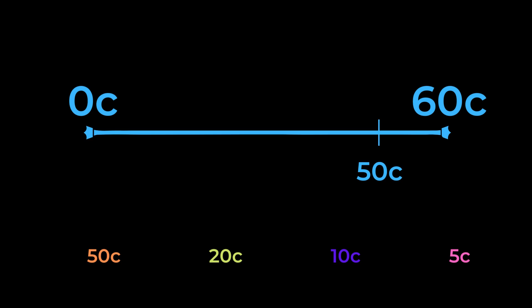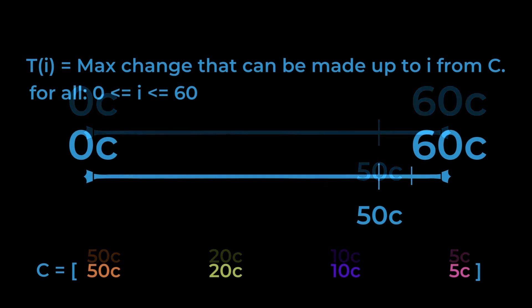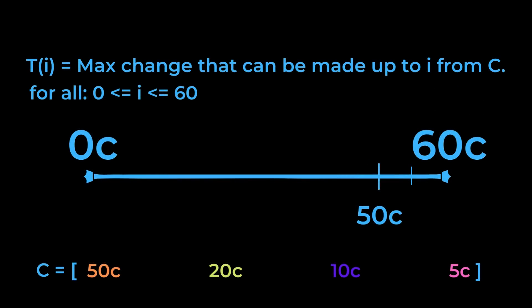Since we need sub-problems, it's no longer sufficient to just check if we can make change for 60 cents. Instead, we're now going to be looking for the most change we can make up to sum i, where i ranges from 0 to 60. This is called the sub-problem definition.